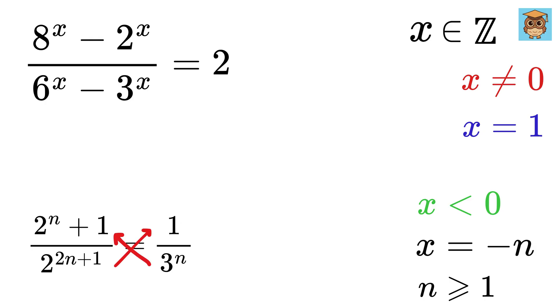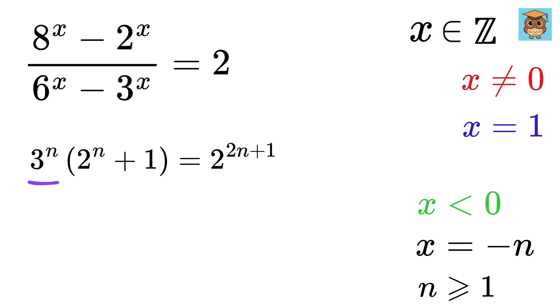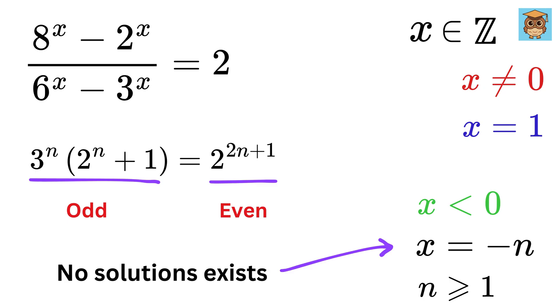Now, cross multiply to get this. Again, this is odd. And 2 to the n plus 1 is also odd. And their multiplication will also be odd. But the right side is even, which means again, no solution exists for x less than 0.